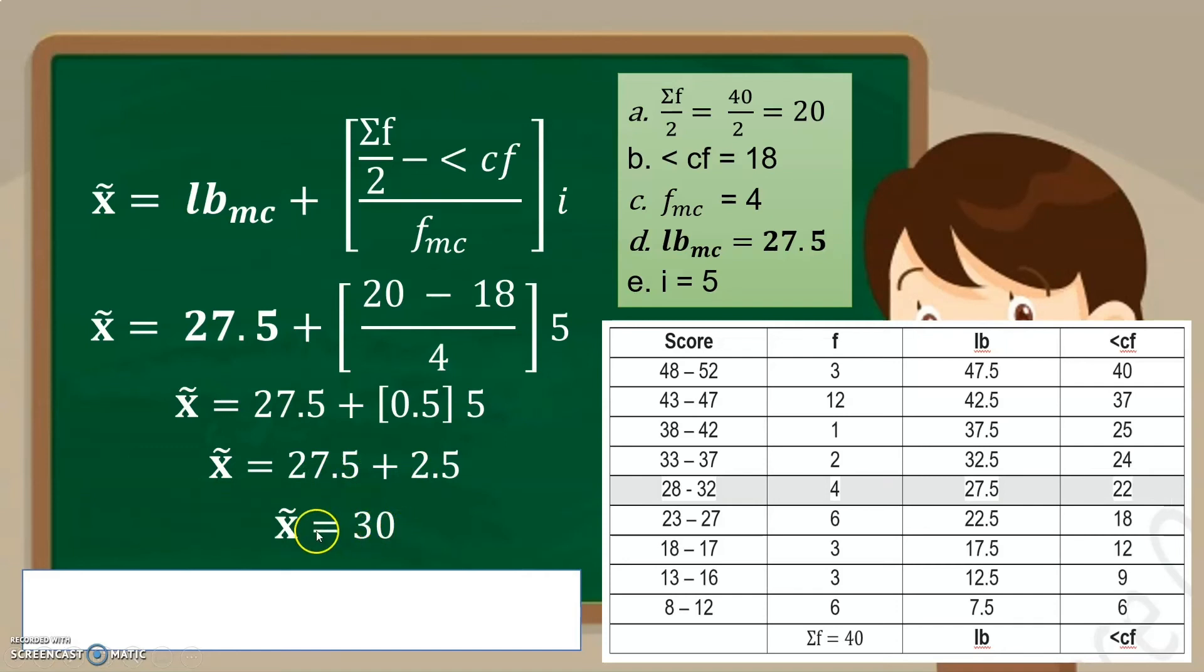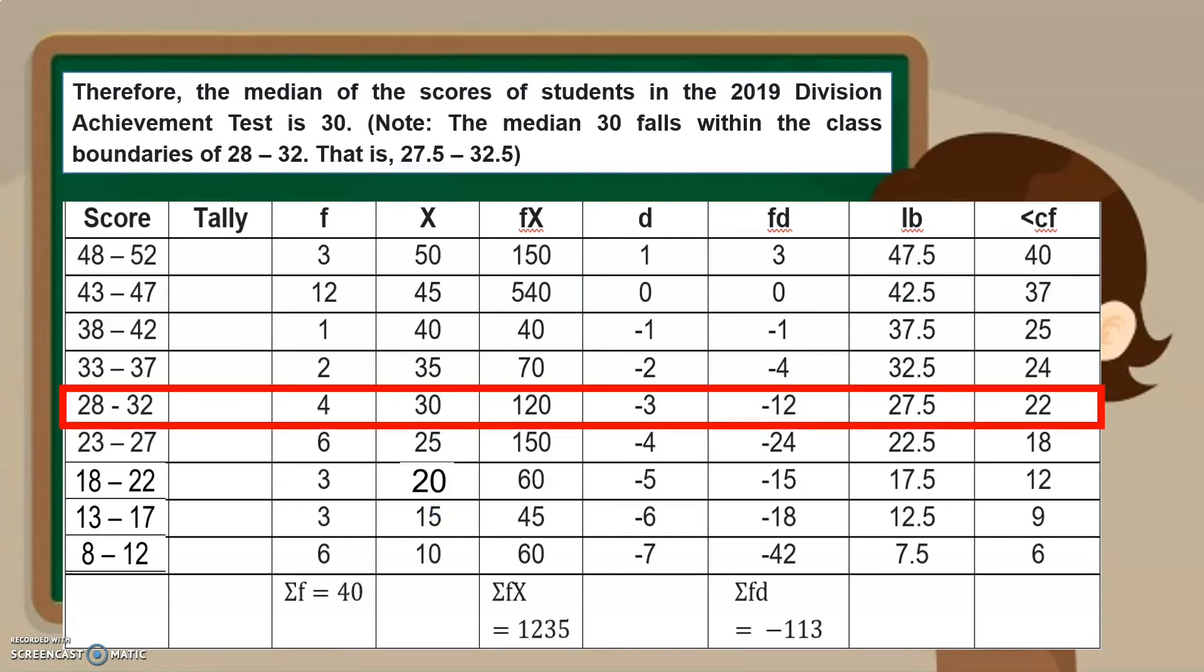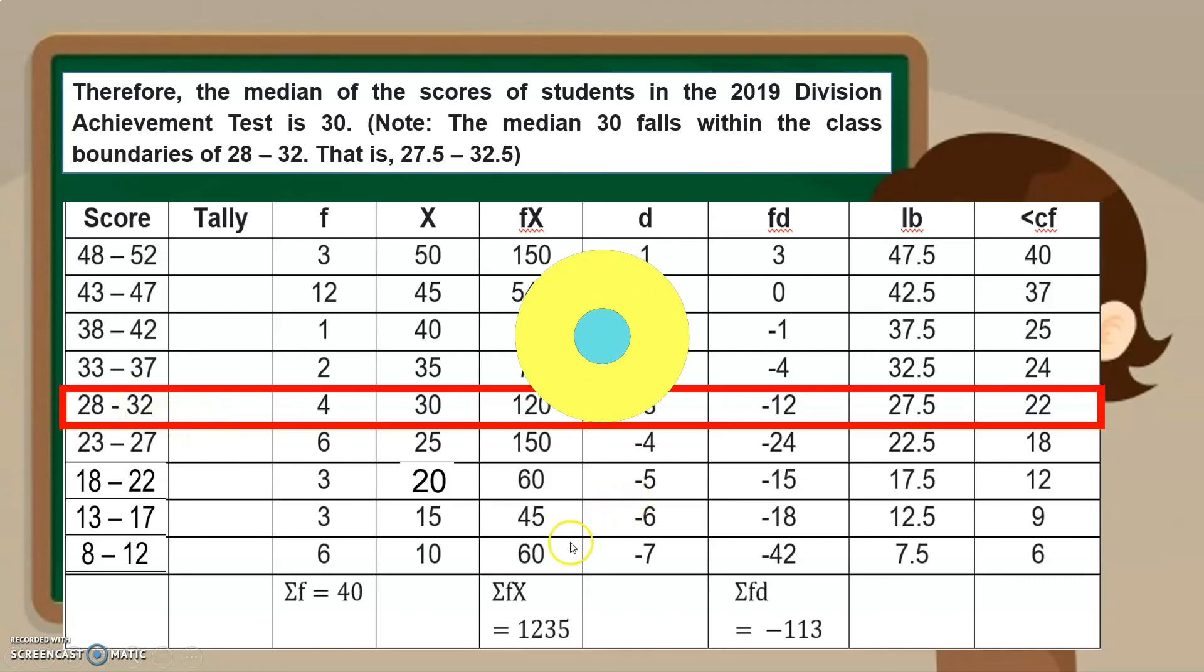Okay, so meaning to say our median is 30. Now, therefore, the median of the scores of students in the 2019 Division Achievement Test is 30. And note that the median 30 falls within the class boundaries of 28 to 32, and that is 27.5 to 32.5.